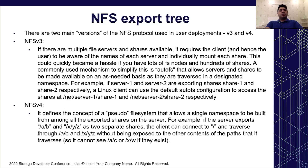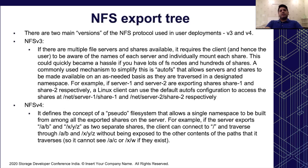This slide talks about how exports are viewed at the client side and introduces the concept of pseudo FS in NFS v4. There are two main versions of the NFS protocol in user deployments: v3 and v4. In NFS v3, with multiple file servers and shares, the client must be aware of the names of each server and individually mount each share — which quickly becomes a hassle with many servers and hundreds of shares. A commonly used mechanism to simplify this is AutoFS, which makes servers and shares available on an as-needed basis as they are traversed in a designated namespace.